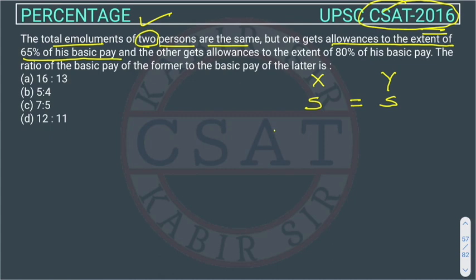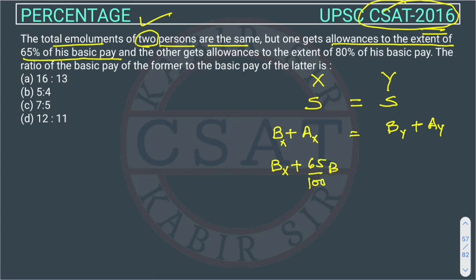The salary includes basic pay plus allowances. So for X it is basic pay of X plus allowances of X, and for Y it is basic pay of Y plus allowances of Y. Person X is getting 65% of his basic pay as allowances. The other person Y is getting allowances to the extent of 80% of his basic pay.